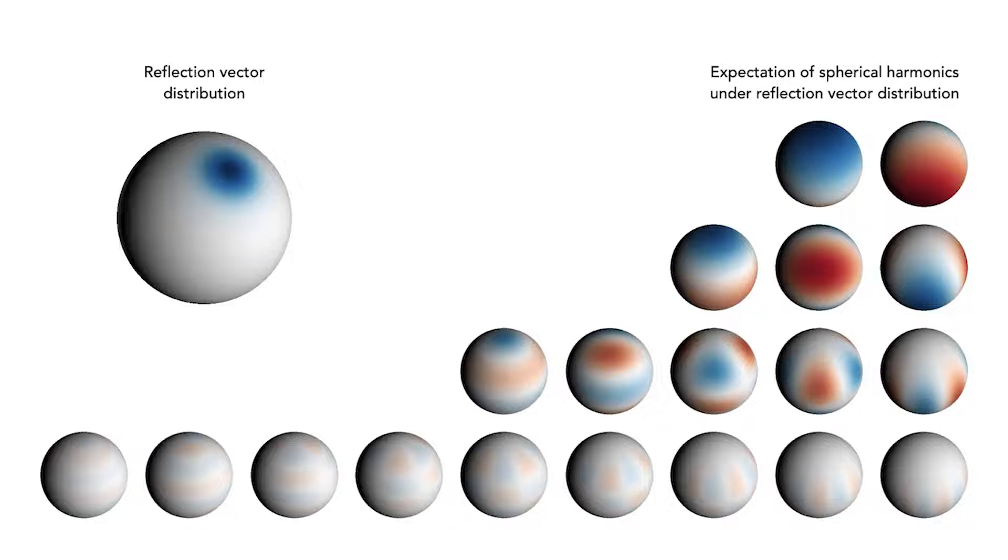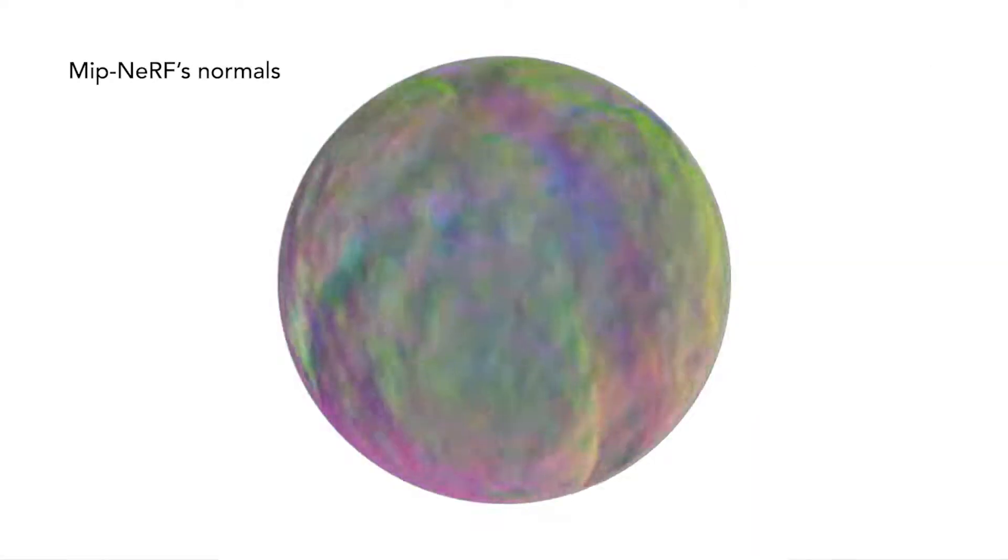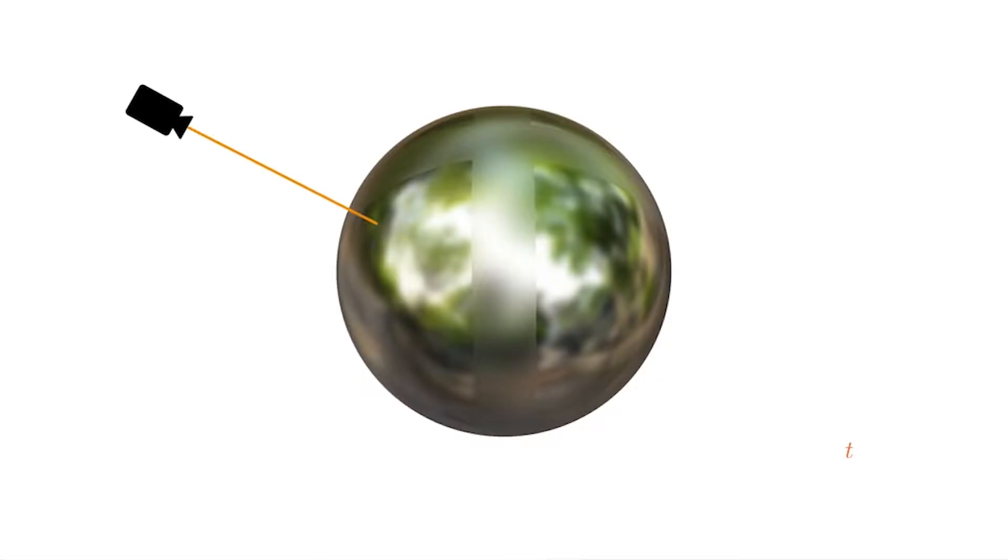Our proposed reflection direction re-parameterization relies on having accurate normal vectors. But as we saw before, NeRF's geometry is extremely foggy, and the normal vectors computed from its volume density are therefore unusable. Looking at a single ray passing through the object, the density repeatedly goes up and down, and as a result the normal vectors point in alternating directions. We apply a novel regularizer that discourages this and produces significantly more accurate normals. It also reduces fogginess by producing weights that are more concentrated around the surface.